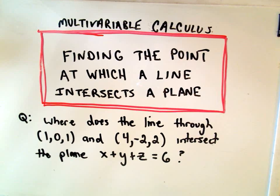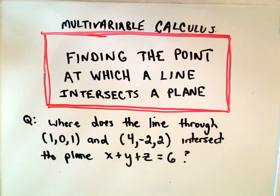Okay, in this video I'm going to talk about finding the point at which a line intersects a plane. The question I'm going to do here is we're going to look at the line that goes through the point (1,0,1) and (4,-2,2). And we want to know where that line intersects the plane x + y + z = 6.